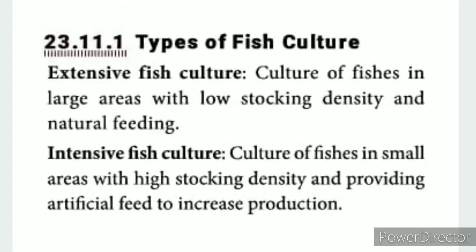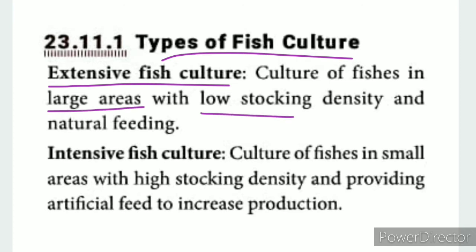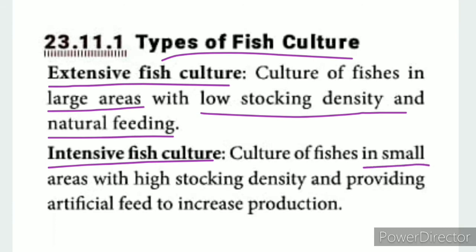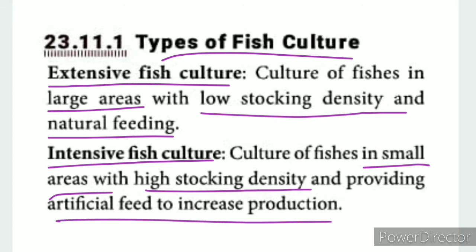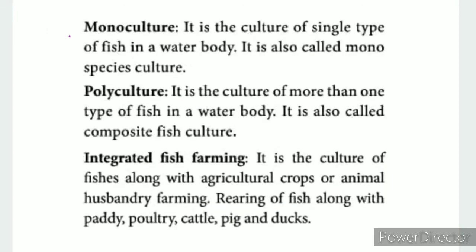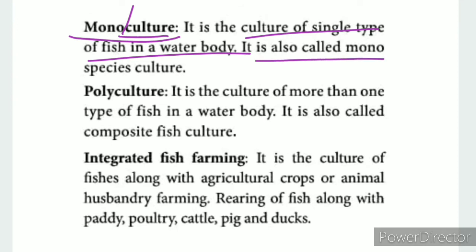Types of fish culture. First, extensive fish culture involves a large area. Intensive fish culture involves a small area with large fish production. Monoculture is the culture of a single type of fish in the water body. It is also called monospecies culture — that is, one species culture.